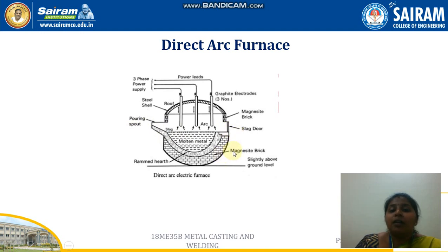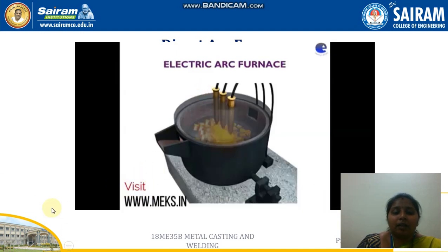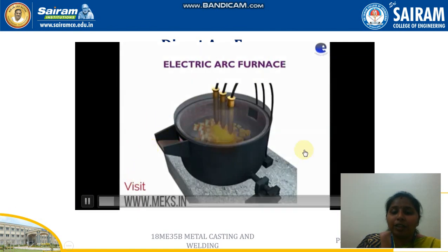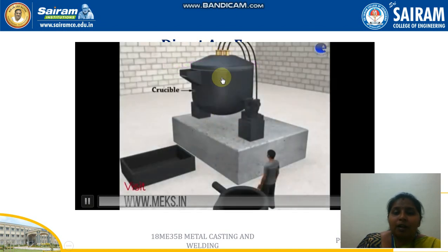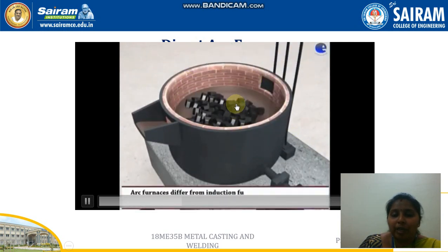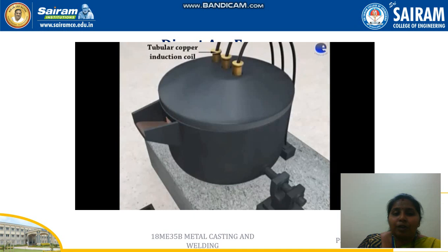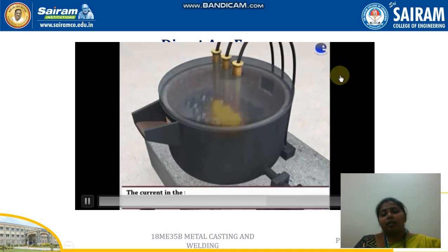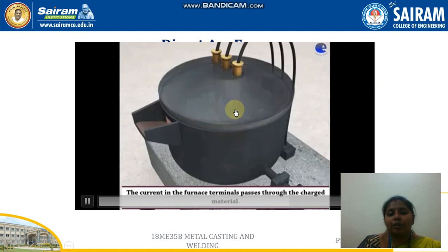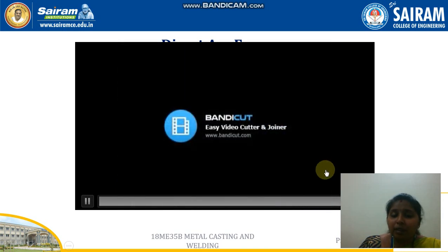This is how the raw material is melted using the direct arc furnace, and here is a short video showing how the electric arc furnace works. You can see the cylindrical shape with three electrodes, the pouring spout, the slag door, and the refractory lining. The raw materials are placed inside, the electrodes are brought in contact while maintaining a small gap, and after closing the lid the arc is produced which melts the raw material. Once the process is completed, the slag is first removed and then the molten metal is taken out.